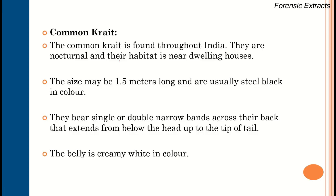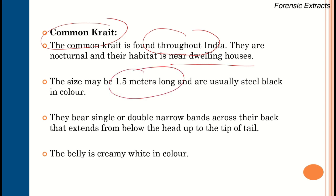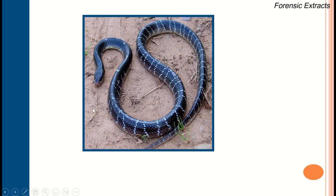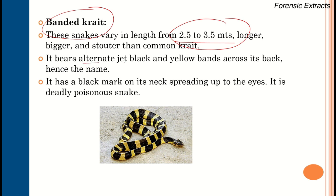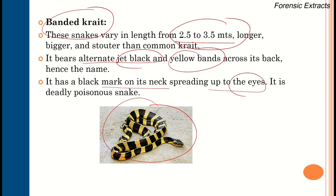The third variety is the common krait, present throughout India, mostly near dwellings. Size is between 1.5 to 2 meters and they are steel black in color, with single and double row bands; the belly is creamy white. A variety known as the banded krait is slightly longer at 2.5 to 3.5 meters, bearing alternate jet black and yellow bands, with a black mark on the neck spreading up to the eye — making it a deadly poisonous snake.